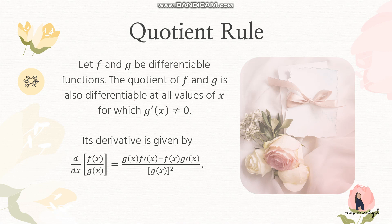You will use the quotient rule if you have two functions that are divided together, or if you have two terms that are being divided. Its derivative is given by: d/dx of f(x) over g(x) equals g(x) times f prime of x, minus f(x) times g prime of x, all over g(x) squared.